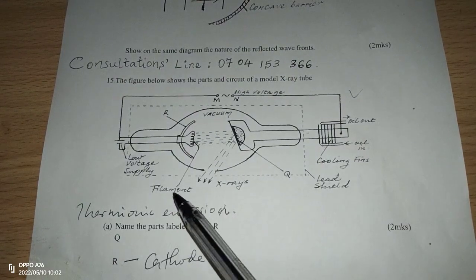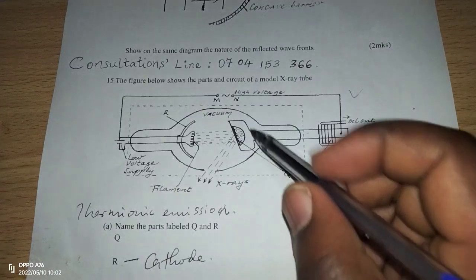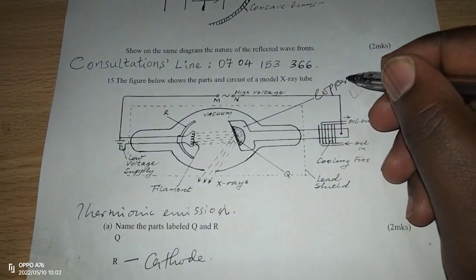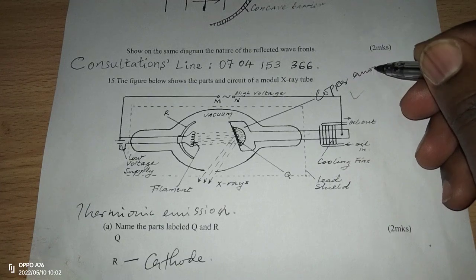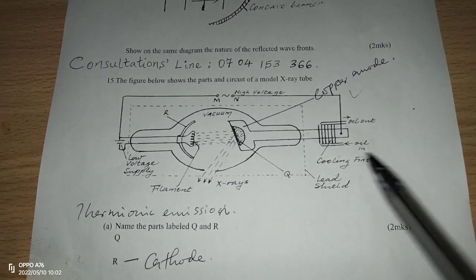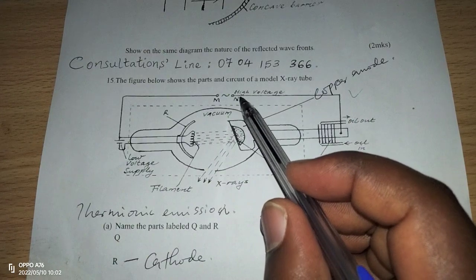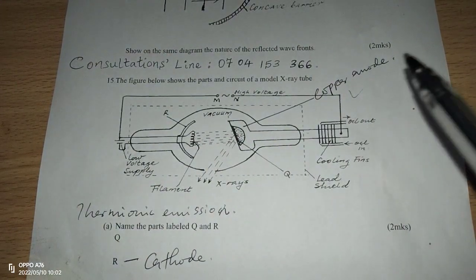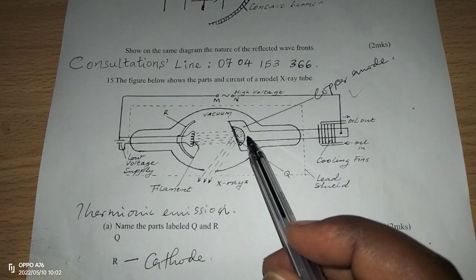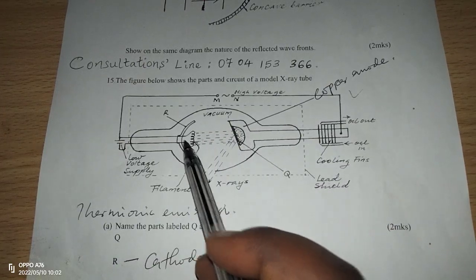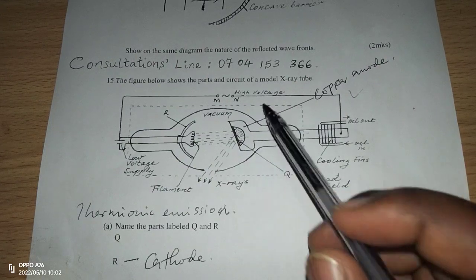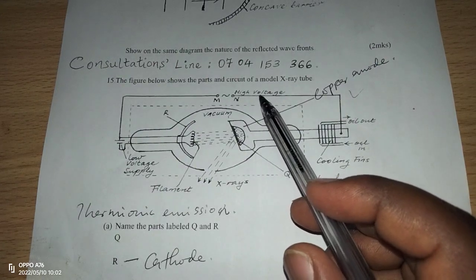On the other side, generally this part is called the copper anode. The copper anode is usually connected to the positive terminal of the extra high tension, such that the extra high voltage provides a very big potential difference between the anode and the cathode. The anode is in the positive terminal of the extra high tension.